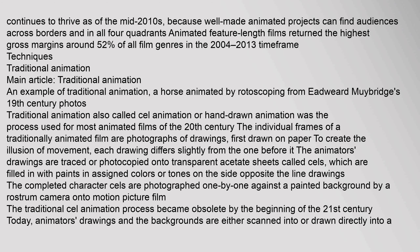Traditional animation, also called cell animation or hand-drawn animation, was the process used for most animated films of the 20th century. The individual frames of a traditionally animated film are photographs of drawings first drawn on paper. The animator's drawings are traced or photocopied onto transparent acetate sheets called CELS, which are filled in with paints in assigned colors or tones. The completed character CELS are photographed one by one against a painted background by a rostrum camera. The traditional cell animation process became obsolete by the beginning of the 21st century.